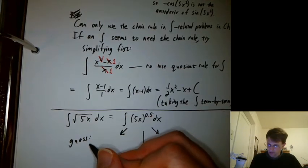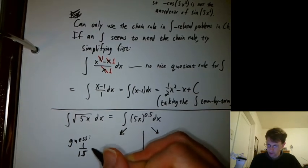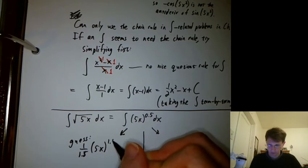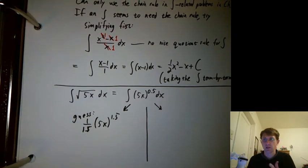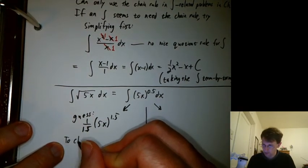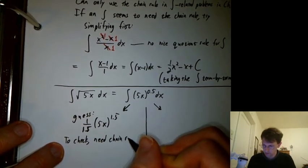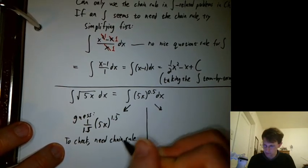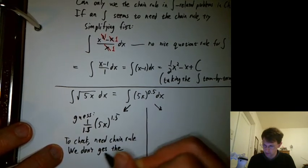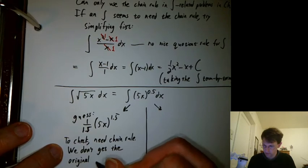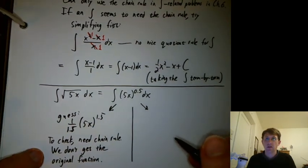We might guess that we could use the power rule and say 1 over 1.5, 5x to the 1.5. To check that, we would need the chain rule and we would get an extra factor of 5 and it just wouldn't work. So what can we do instead?